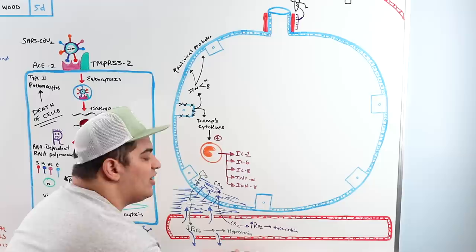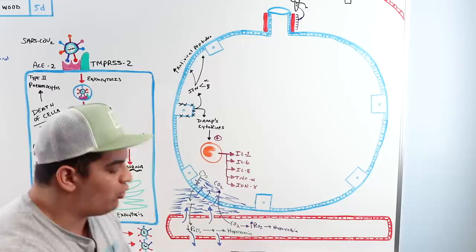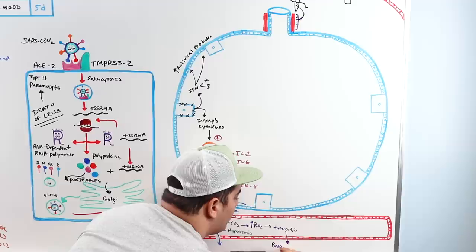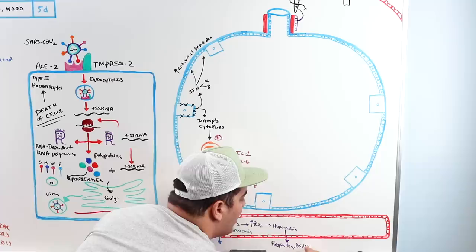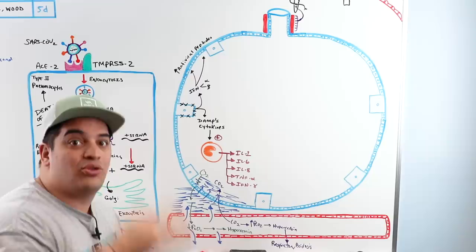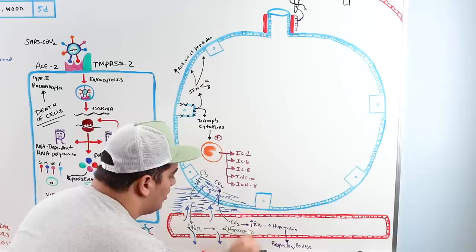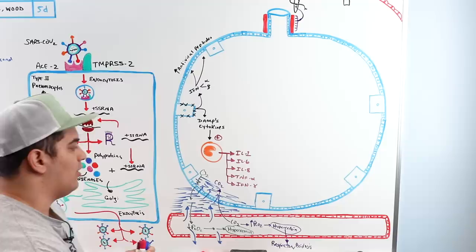As CO2 builds up in the blood, it converts to carbonic acid and breaks down into protons, making the blood acidic — potentially progressing to respiratory acidosis. Initially, patients breathe harder to expel CO2 (causing alkalosis), but over time the fear is progression to acidosis. Hypoxemia leads to shortness of breath.